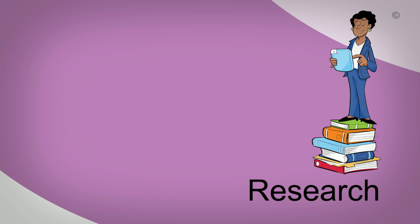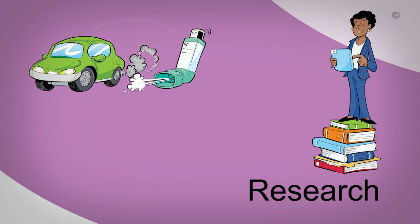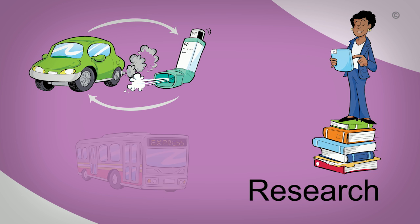You start by searching for relevant research evidence on the possible link between car emissions and respiratory symptoms, as well as the effectiveness of strategies to alter the built environment to increase the use of public transit. You assess how well the research was conducted and use the best available evidence to draw conclusions about the connection and find effective strategies.